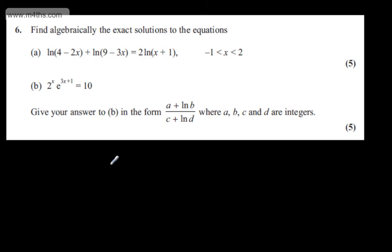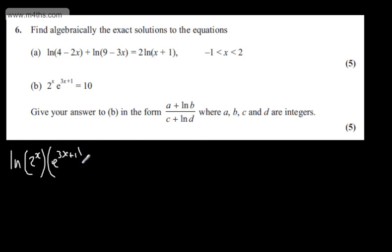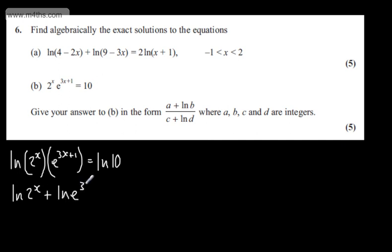I'm going to use the same log laws as before. I'll take the natural log of both sides, writing this as the natural log of 2 to the x multiplied by e to the (3x plus 1), equal to the natural log of 10. Using the product-to-sum rule, this becomes: ln(2 to the x) plus ln(e to the (3x plus 1)) equals ln(10).